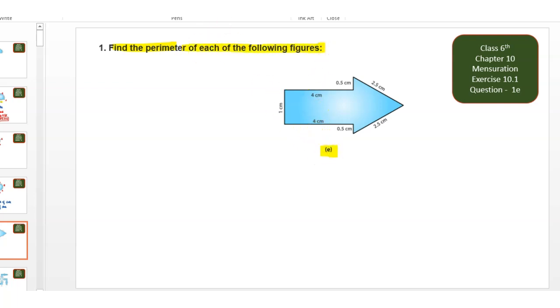In this part, we have to find for E part. Here is the arrow sign. So here is number of sides.